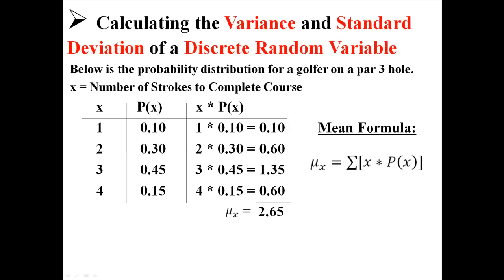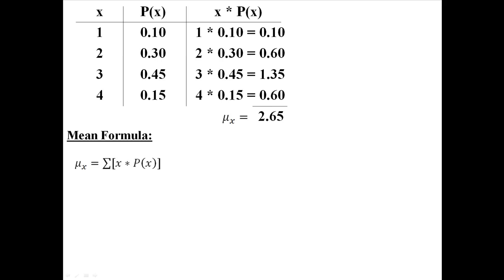Most of the time he will get it in in 3 hits, about a 45% chance. There's a 30% chance of getting it in in 2 hits, and sometimes he gets it in in 1 or 4 hits. This is the probability distribution I went through to find the mean of 2.65. We've already found using the mean formula that the mean for this distribution is 2.65.